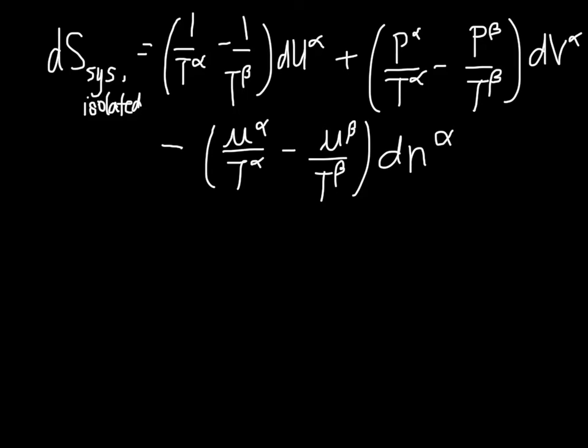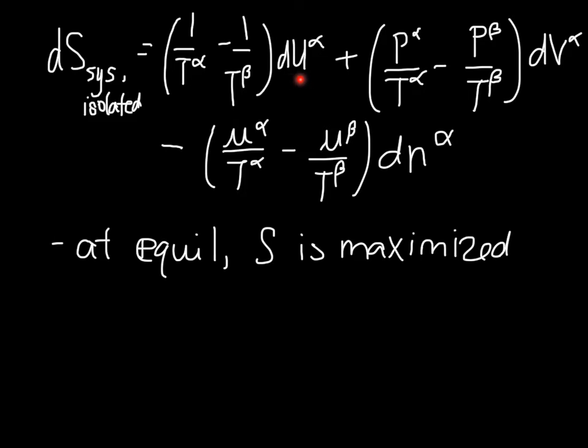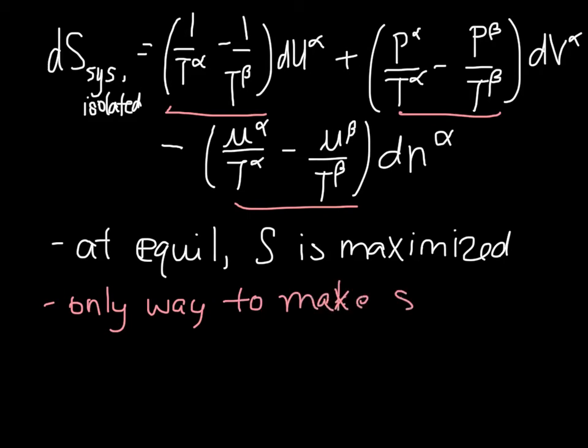Now, we know that at equilibrium, S has to be maximized. So, at equilibrium, S is maximized. So, it would be possible for us, mathematically speaking, to find changes in U, V, or n, that might result in dS going up, instead of being 0. What we want this to be is 0. Because if S is maximized, then dS is 0. But, we can't guarantee that, necessarily, unless the stuff in the parentheses is 0. So, the only way to make sure dS equals 0 is for the stuff in parentheses to be equal to 0.